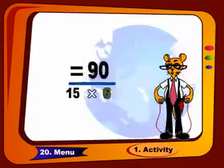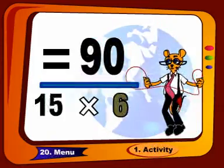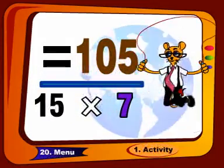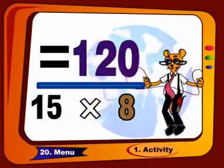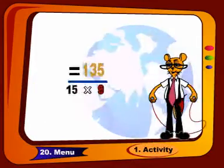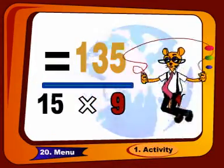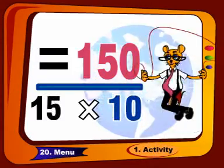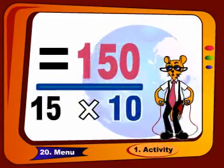15 sixes are 90, 15 sevens are 105, 15 eights are 120, 15 nines are 135, 15 tens are 150.